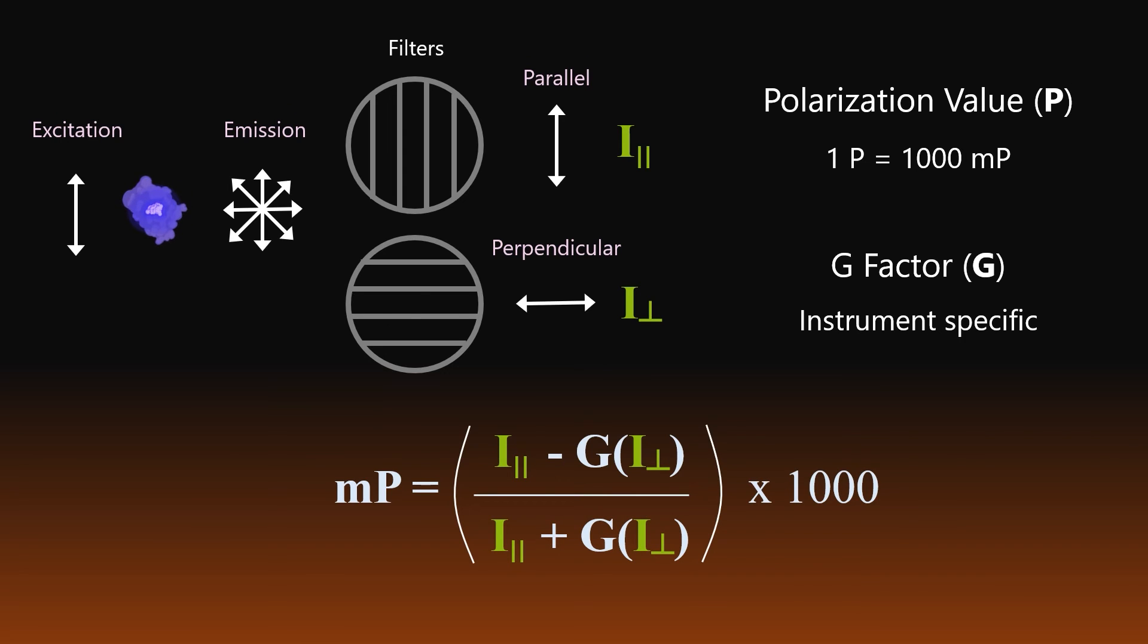Modern instruments usually have the g-factor pre-calculated, and can automatically calculate fluorescence polarization for your experiments. If you need to determine, set up, or calculate the g-factor, please refer to your instrument guide, or check our online FAQs.